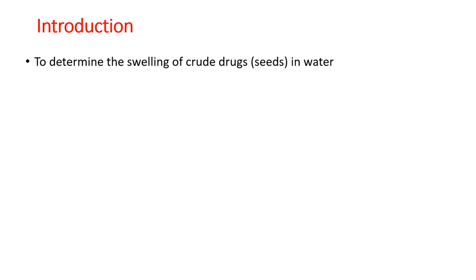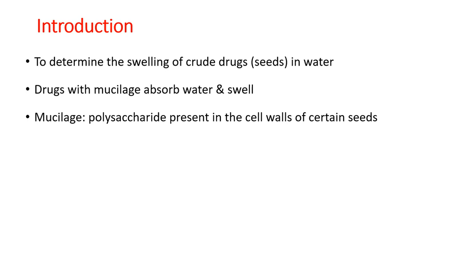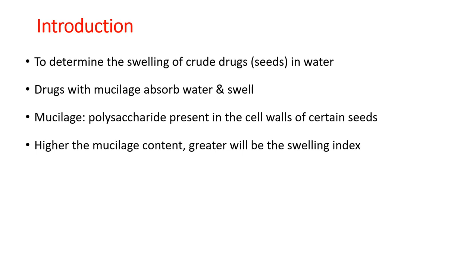Swelling index is calculated as the swelling of the crude drug — a desired amount of crude drug in water. Certain crude drugs have the ability to absorb water and swell. These drugs contain mucilage, and this mucilage absorbs the water and causes the seeds or crude drug to swell, increasing its volume. Mucilage is a carbohydrate — a polysaccharide — present generally in the cell walls of certain seeds or sometimes in other parts of the crude drug. The more the mucilage, the more will be the swelling observed for a particular crude drug.